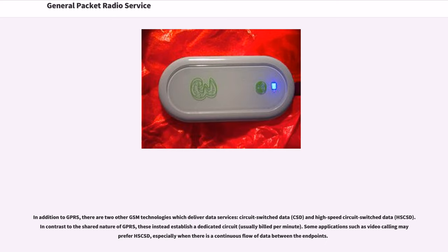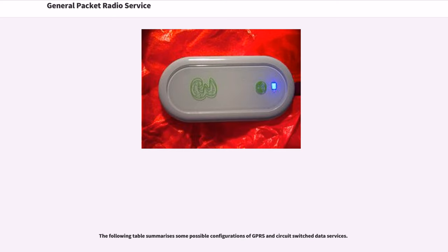In addition to GPRS, there are two other GSM technologies which deliver data services: circuit switch data, CSD, and high-speed circuit switch data, HSCSD. In contrast to the shared nature of GPRS, these instead establish a dedicated circuit, usually billed per minute. Some applications such as video calling may prefer HSCSD, especially when there is a continuous flow of data between the endpoints.